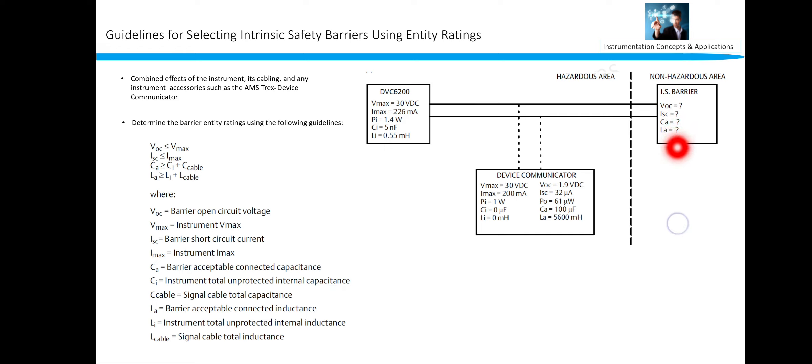The VOC, VOC is barrier open circuit voltage of the barrier. So VOC, ISC, CA and LA need to be calculated for this barrier. VOC should be less than Vmax, and Vmax for the devices, for any device Vmax, Imax, Pi, Ci and Li will be given on that particular instrument only. For DVC, Vmax is 30 VDC and for Vmax device communicator is 30 VDC.